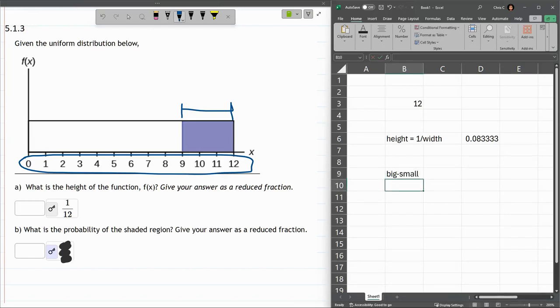So for me right here, this is equal to 12 minus 9, which is 3. And I just take big minus small, the width I want, divided by the total width. So my probability is going to be equal to 3, that value divided by that value, right there, 0.25.